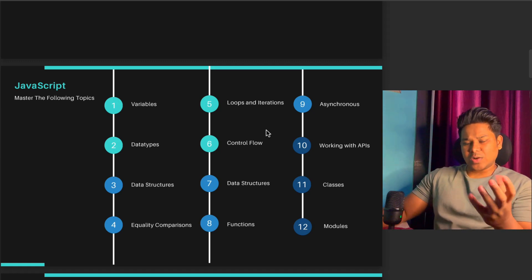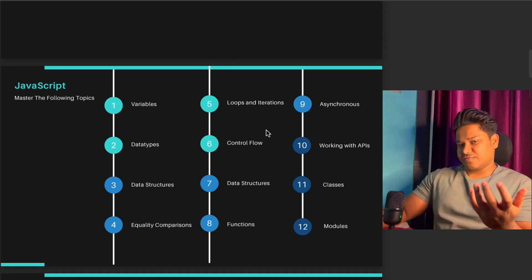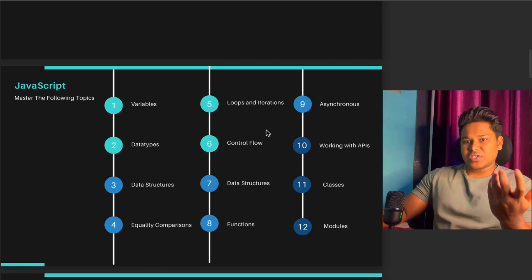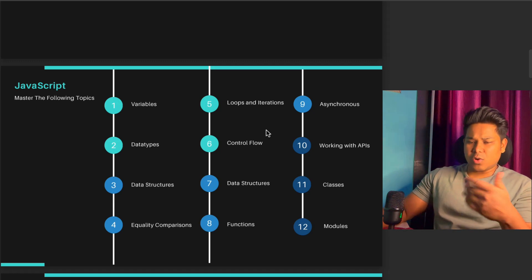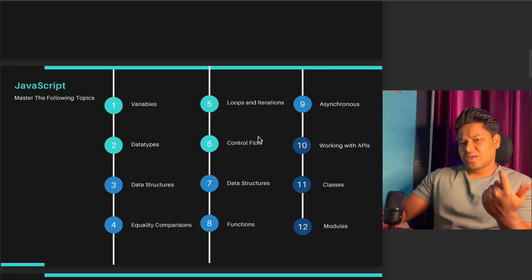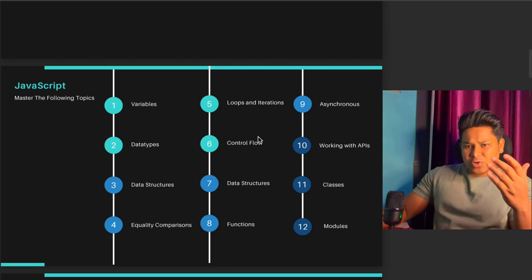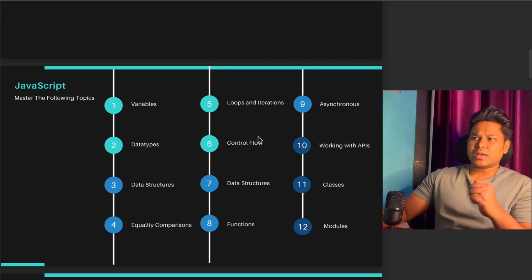After control flow, you have to know about functions — what types of functions we have, including normal functions and async functions. Mostly all modern applications use function-based components, and you need to know how to convert them into async function-based components so you can get data in a more synchronized way.